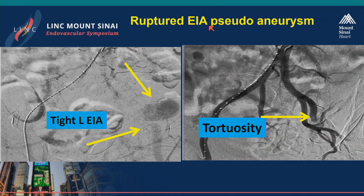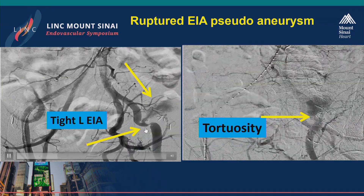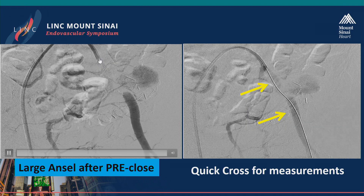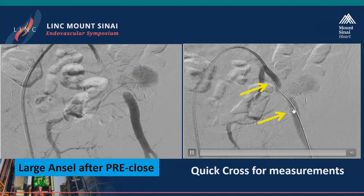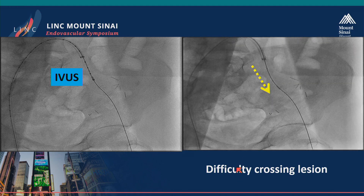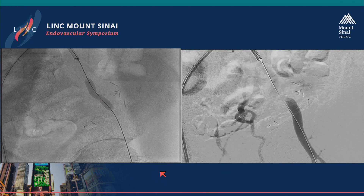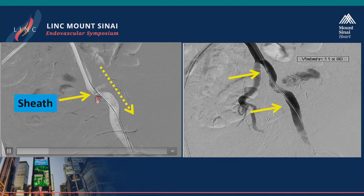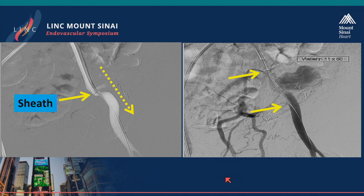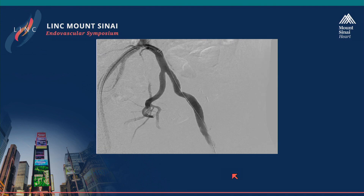Last case: a ruptured external iliac artery pseudoaneurysm in a transplant patient whose transplant had failed, leaving them on dialysis — and they ruptured the pseudoaneurysm. You can also see tight calcific disease in an area of tortuosity. After pre-closing, the large access sheath is placed and we cross the lesion. Measurement is done with a 50-centimeter QuickCross catheter, then IVUS. We couldn't get a non-compliant balloon across initially, so we downsized and ballooned a little harder. With our Viabahn already prepared and measured by IVUS, we advanced the sheath over the dilator to deliver an 11 by 50 Viabahn self-expanding nitinol stent — appropriate for external iliac. Here's the Viabahn and the post-dilatation, with the final result treating both the stenosis and the rupture.